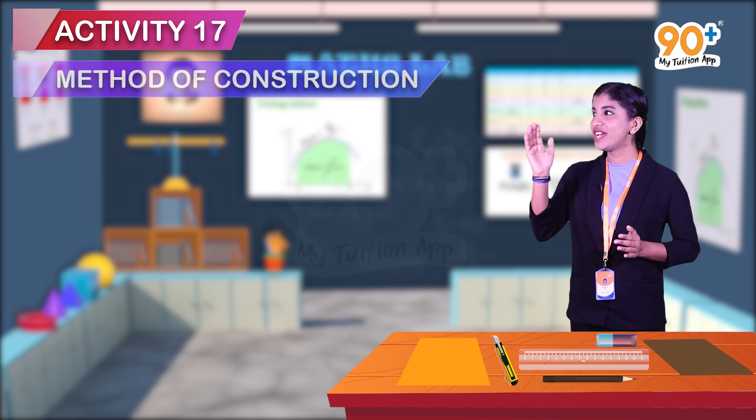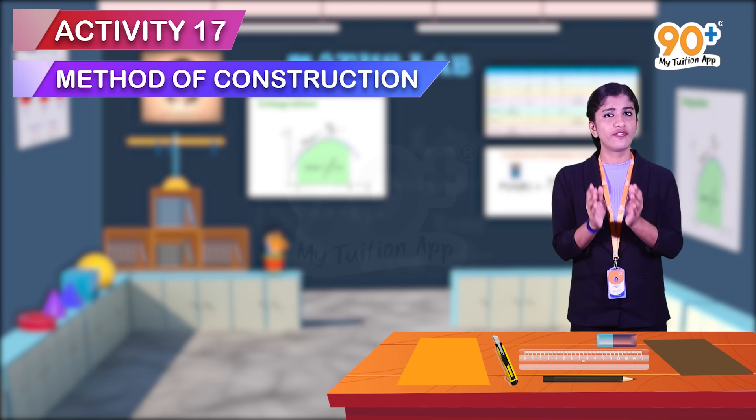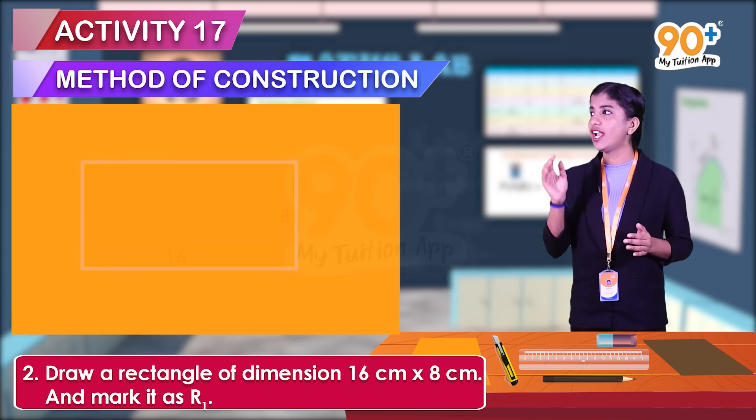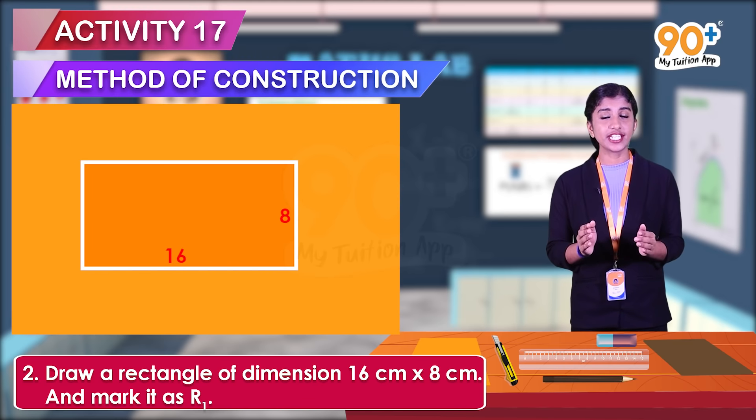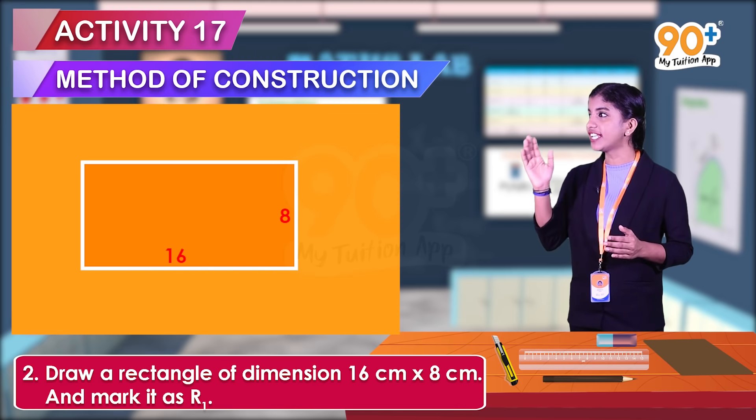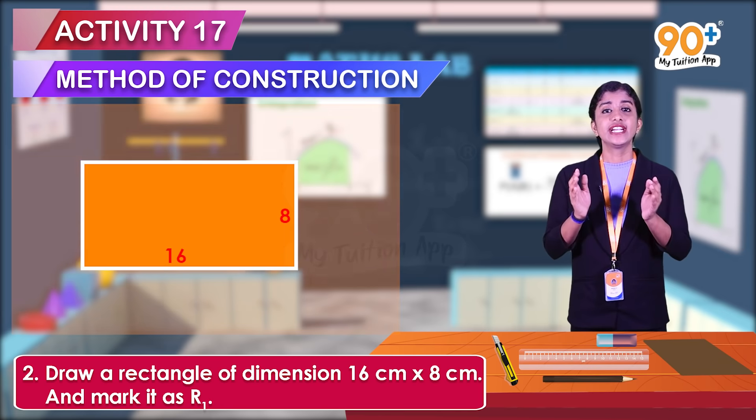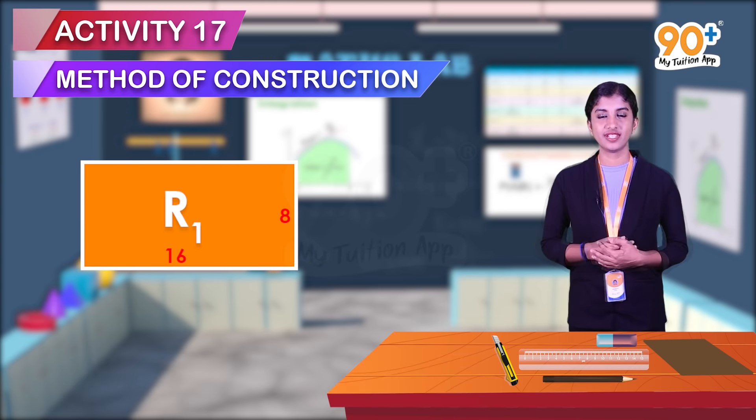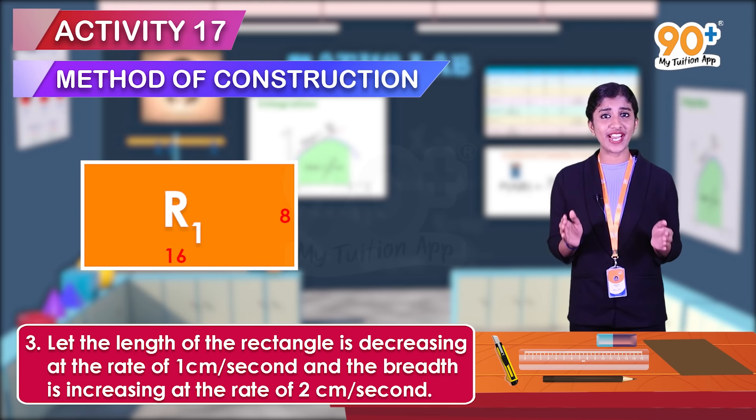Now let us move on to the next step, that is method of construction. First, take a chart paper and draw a rectangle of dimension 16 centimeter into 8 centimeter on it. Then cut off the rectangle and mark it as r1.